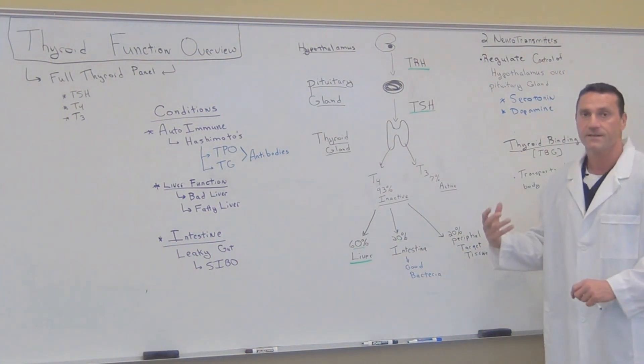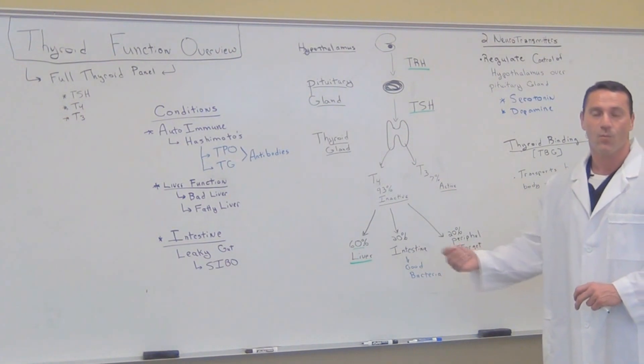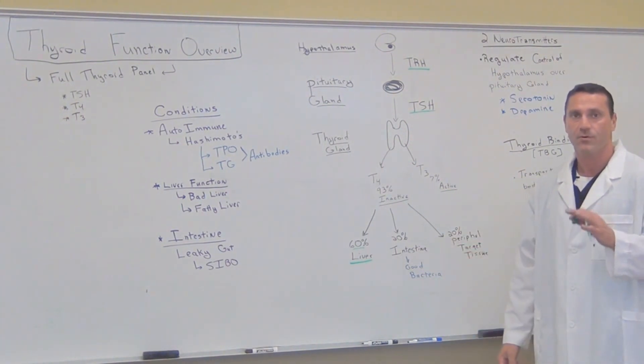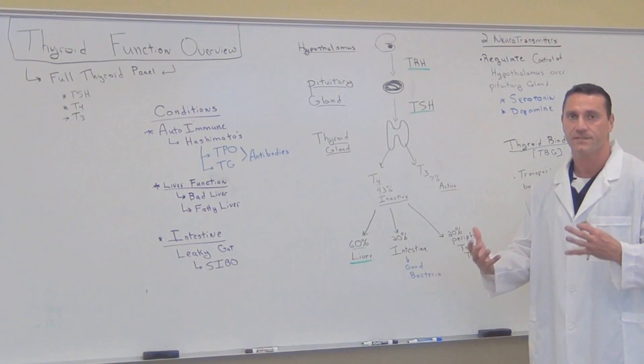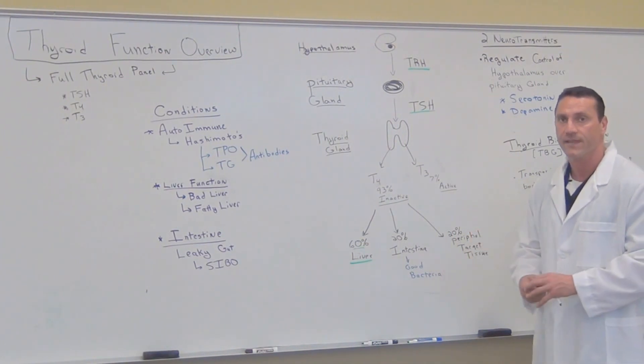Now, the majority of serotonin is produced at nighttime while we're sleeping. So if you're having poor night's sleep, you're not producing enough serotonin, this is what helps, this is what basically dysregulates the thyroid gland.